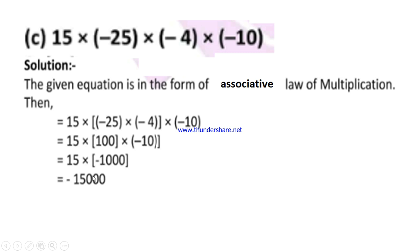So again, 15 × (-1000). Positive × negative = negative, 15 × 1000 = 15,000, so -15,000.